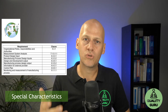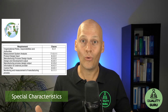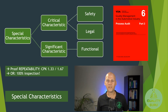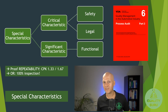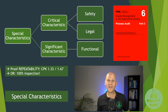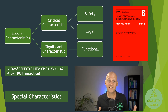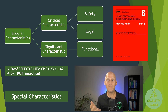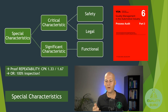Let's remember what special characteristics are. We have the AIAG definition: two kinds — critical characteristics (CC) and significant characteristics (SC). Critical characteristics are more critical than significant characteristics. In critical characteristics we have safety and legal. Safety means if the product fails, a safety issue is the consequence — for example, if you're driving your car and the brakes fail, the car could crash and hurt the people inside.